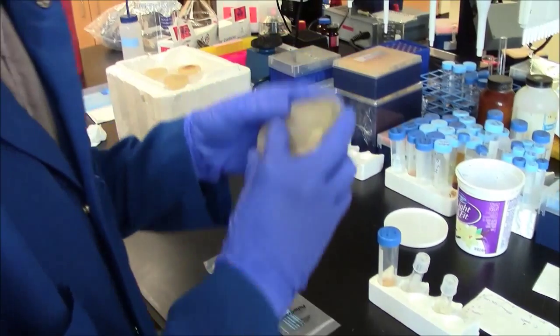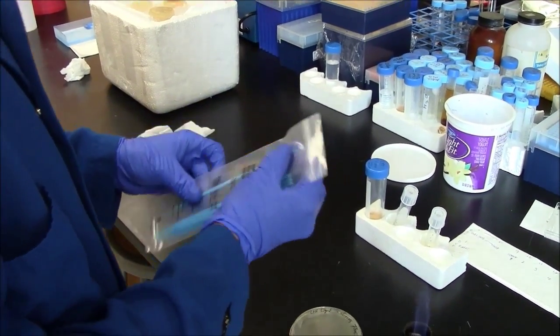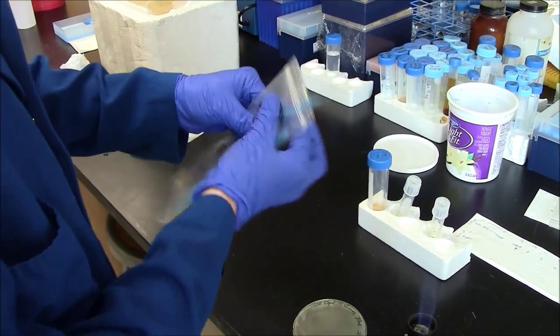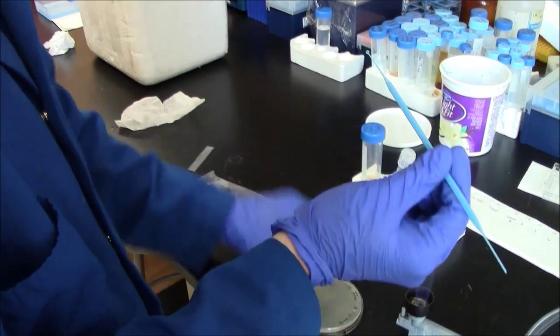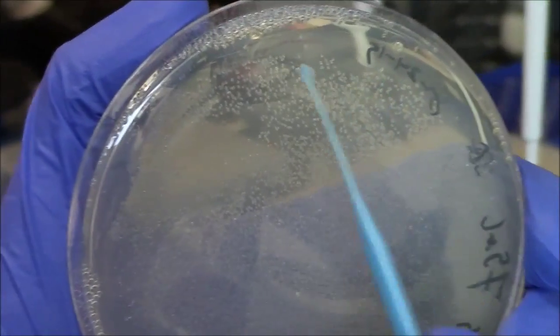This will require some skill. You want to avoid digging into the agar, so just swipe along the surface of the agar. In this case, all the colonies on the plate are genetically identical, so Josh is actually going to pick up more than one colony here.